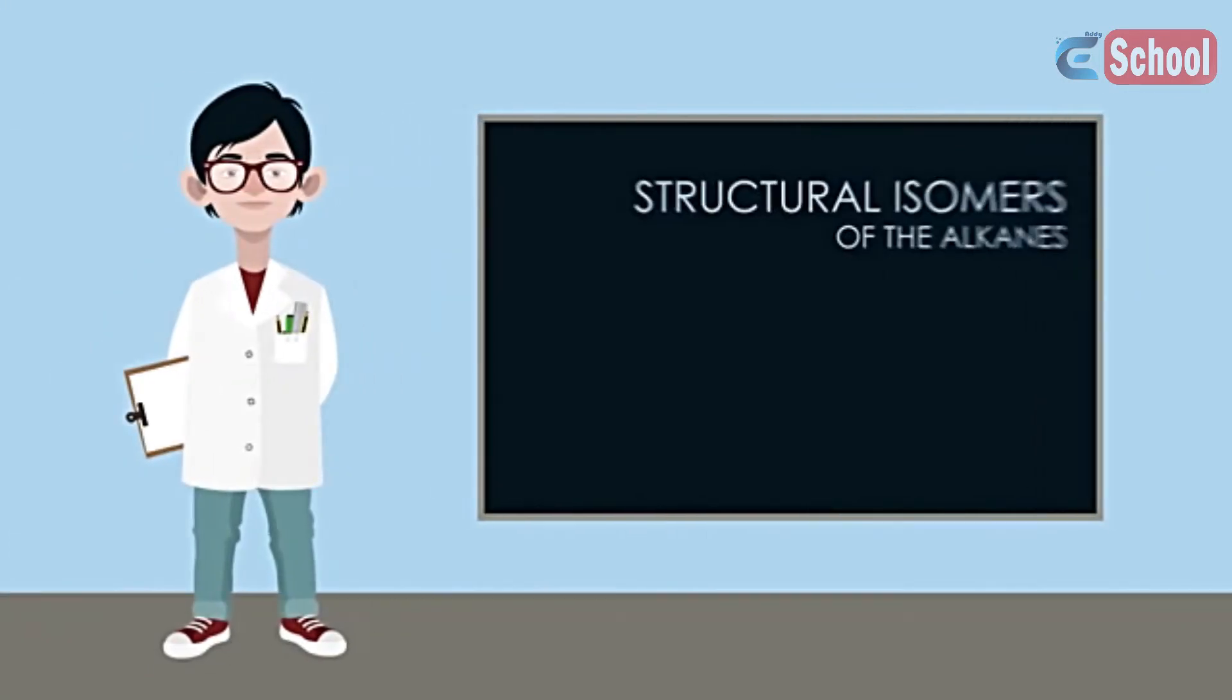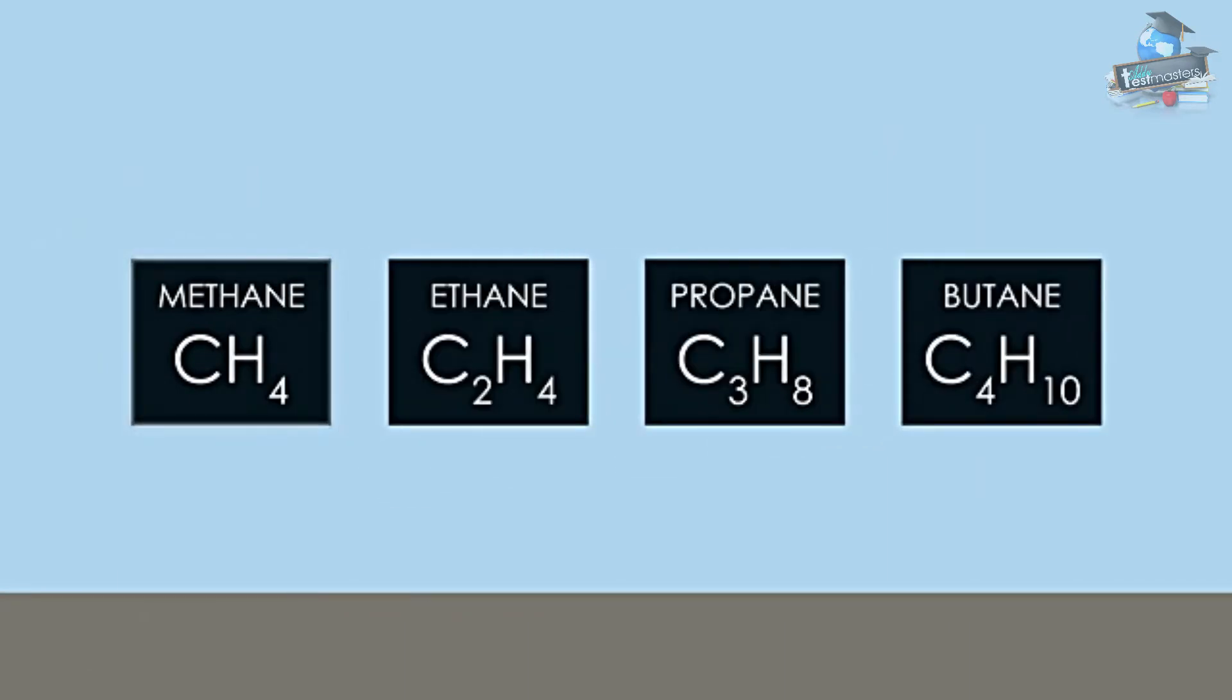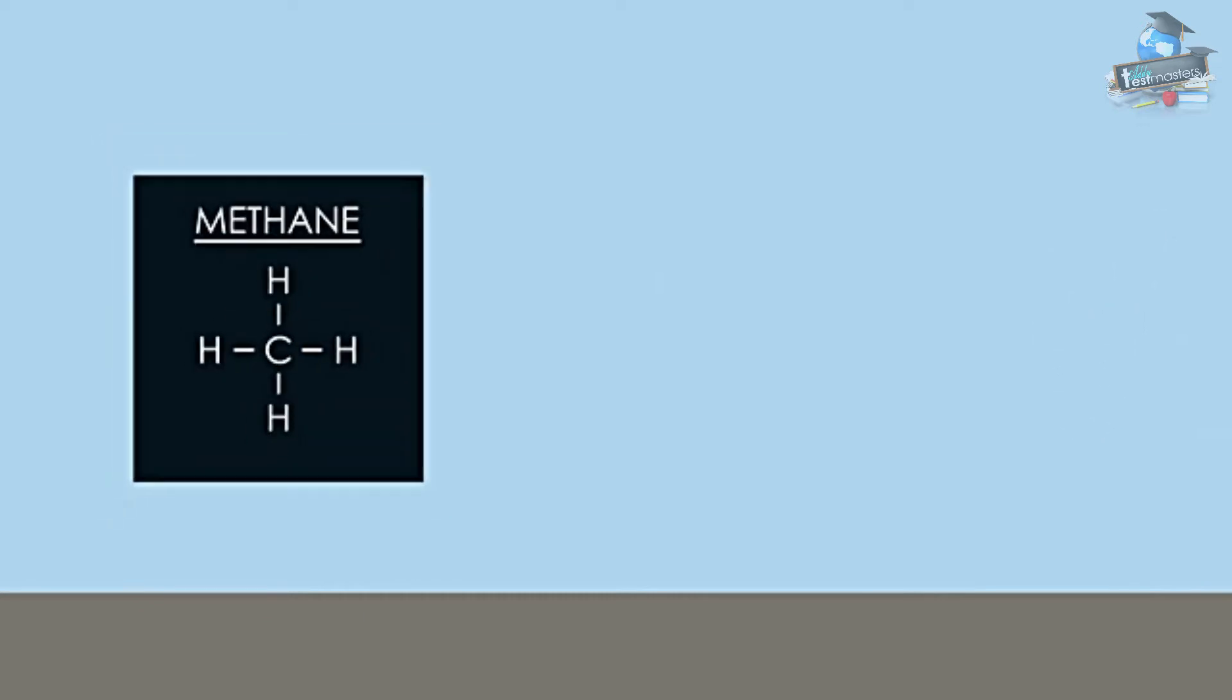In this video you will learn about structural isomers of the alkanes, what structural isomers are, and be able to give examples of isomers. Here are the formulae of the first four alkanes: methane, ethane, propane, and butane.